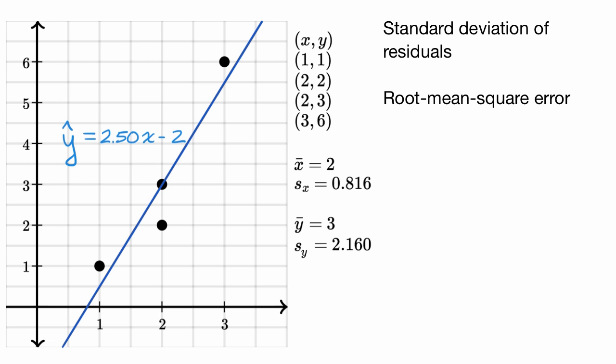There's several names for it. We could consider this to be the standard deviation of the residuals, and that's essentially what we're going to calculate. You could also call it the root mean square error, and you'll see why it's called this, because this really describes how we calculate it. We're going to look at the residuals for each of these points, and then find the standard deviation of them.